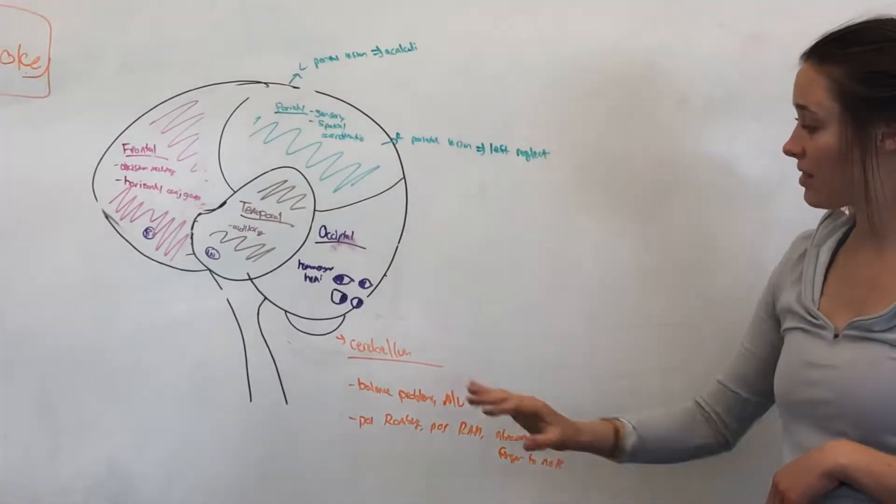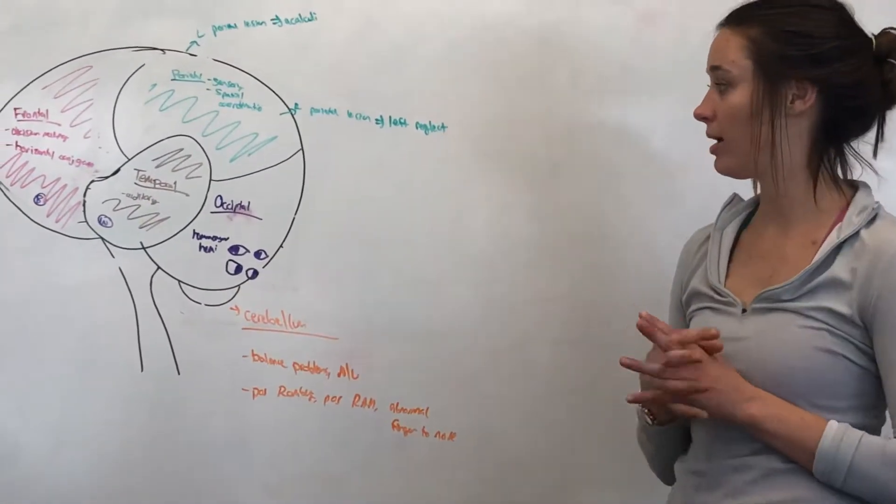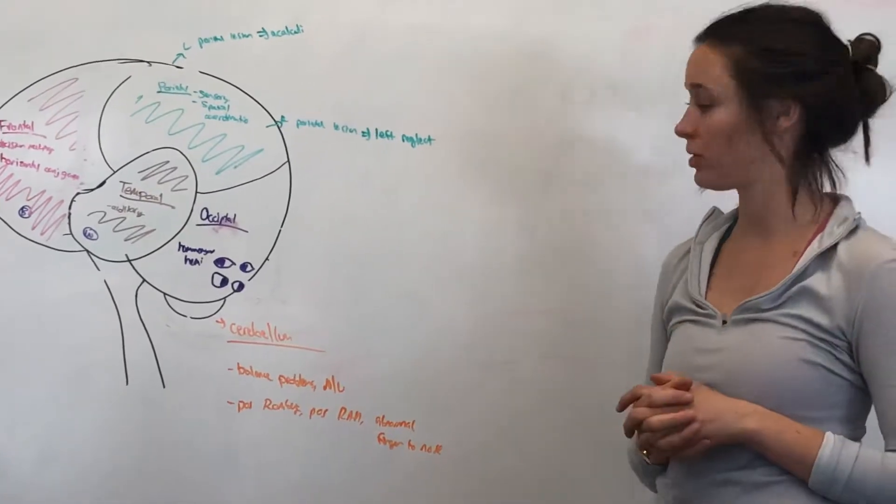So those were the four lobes. And then I just wanted to touch briefly on the cerebellum. So the cerebellum is right here. It's a structure just right, posterior and inferior to the cerebral cortex.